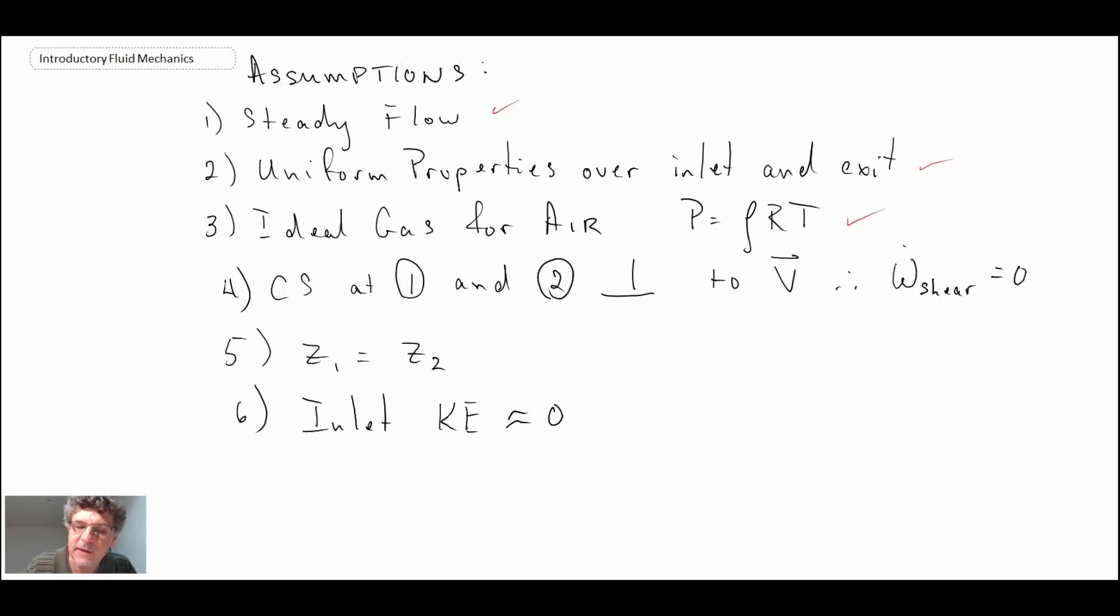We're assuming the control surface at one and two is perpendicular to the velocity vector and therefore the shear component disappears. There is no change in potential energy.